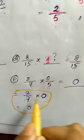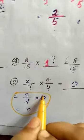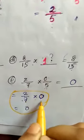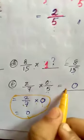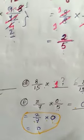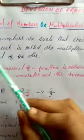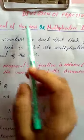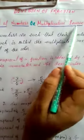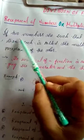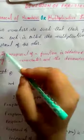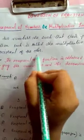So 2/7 × 0/5 = 0, because 0 divided by any number is 0, and 0 multiplied by any number is also 0. Now let's start a new topic: reciprocal of numbers, also called multiplicative inverse. If two numbers are such that their product is 1, then each is called the multiplicative inverse or reciprocal of the other.